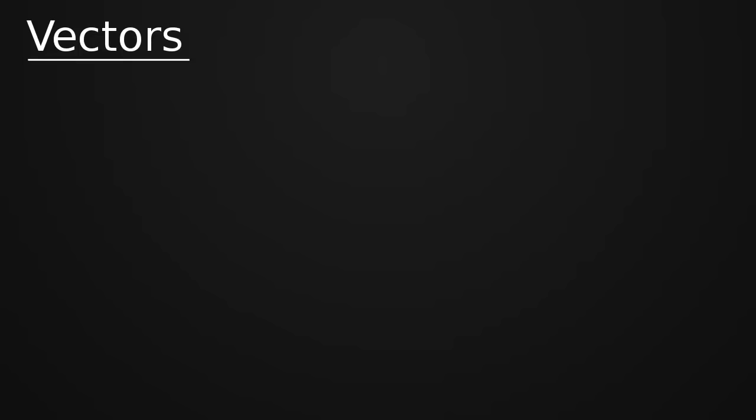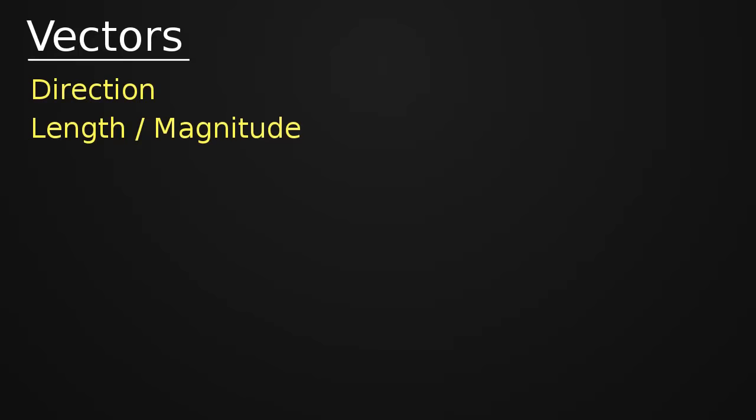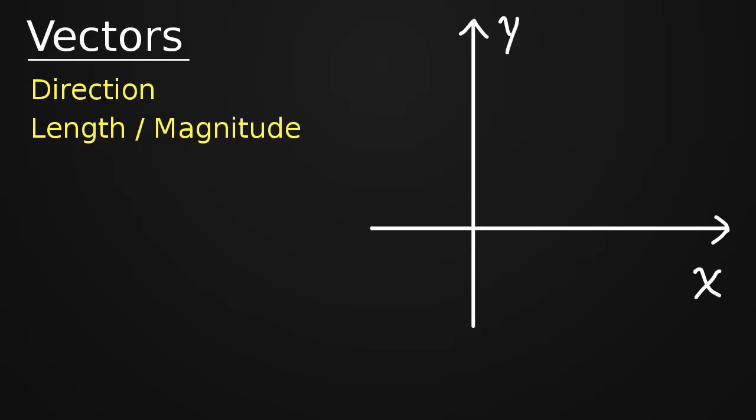Let's start by asking the most basic question: what is a vector? A vector is really just two pieces of information — direction and length, or what's also called magnitude, two different words for the same thing. Now, length is a very physical, visual concept — it's something we can see, it's something we can measure. And the same with direction; it's our orientation, it's a very visual thing.